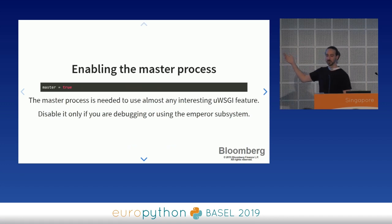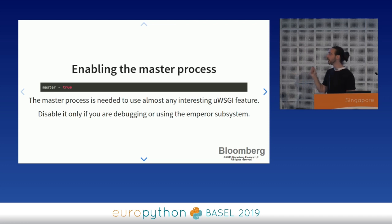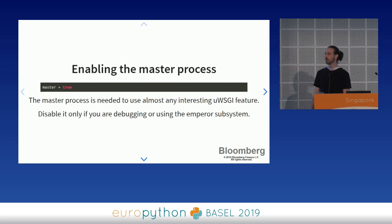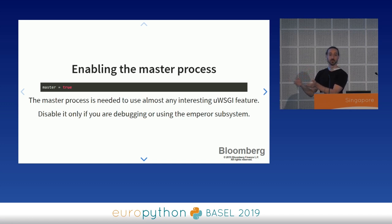The master process is what makes UWSGI special — you want it on. I bring it up because there are some circumstances where you want it off, specifically when you're debugging. If you turn the master process off and run in a single process, the PID created immediately after you start UWSGI is where your code will be running. You can then use tools like strace or Valgrind without having to deal with follow-fork-child and all the forking options. Otherwise, not that interesting.